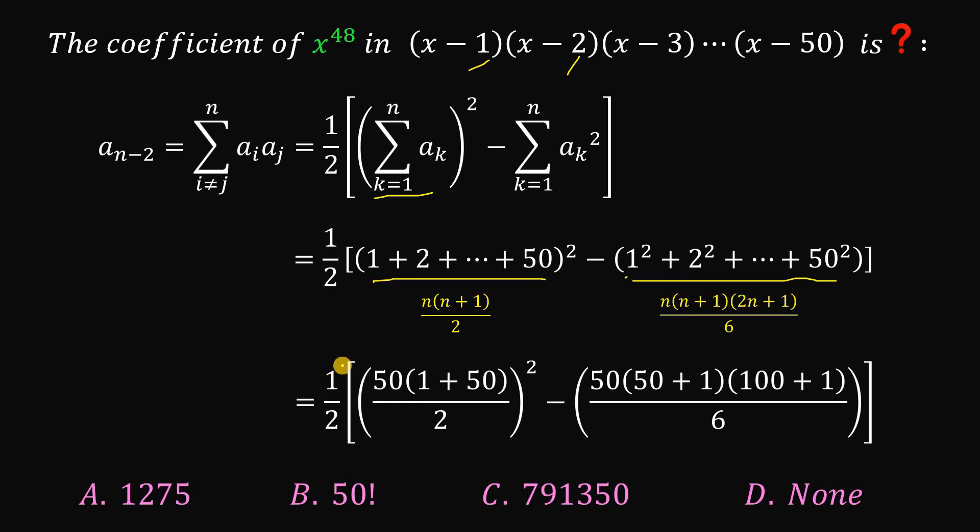Therefore, this is equivalent to just 1 half multiplied by 50 multiplied by 1 plus 50 over 2 raised to the power of 2 minus 50 times 50 plus 1 multiplied by 2 times 50 or simply equal to 100 plus 1 all over 6.